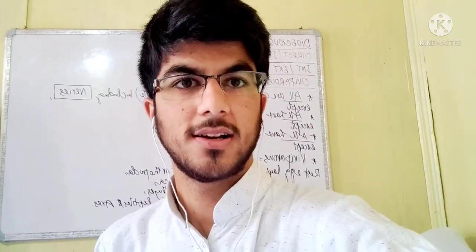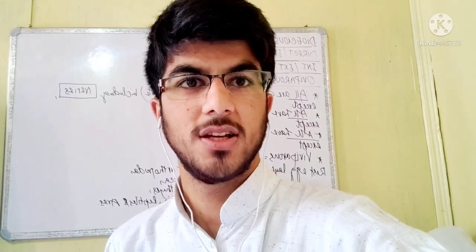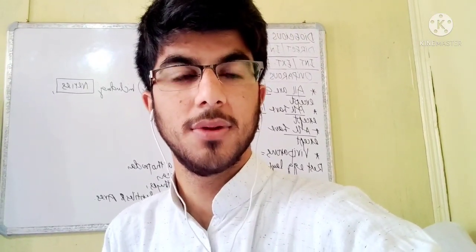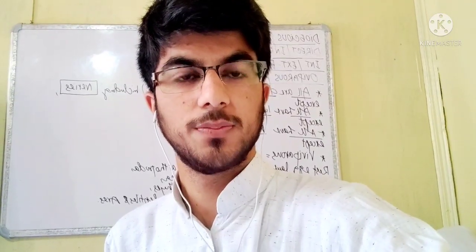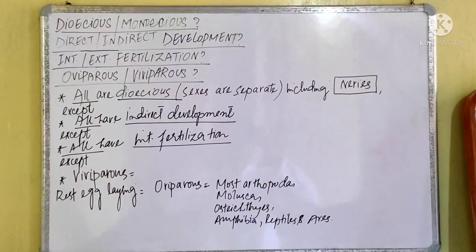Hello dear students, my name is Shahid Rasool and I am currently a first year MBBS student at GMC Srinagar. Today in this video we are going to talk about how to remember the most volatile points in your Animal Kingdom — which animals have internal or external fertilization, which are oviparous, which are viviparous, which have indirect development, and which have direct development. I have made a special arrangement of all these pointers, so let's get into it.